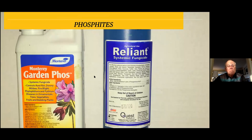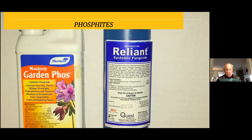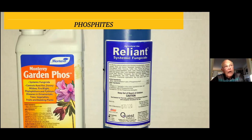The two phosphite products available in the United States in small quantities are Monterey Garden Phos and Reliant — they're essentially the same. You can get them on Amazon or in some garden stores. They say 'systemic fungicide' on the label — I'm not putting it on the roots; I'm using it on the leaves. I know it'll get down to the soil but in minimal amounts. When I spray a rosebush, I put about three or four ounces of liquid mixed at one ounce per gallon, so the amount of phosphorus ending up on the ground is very minimal.